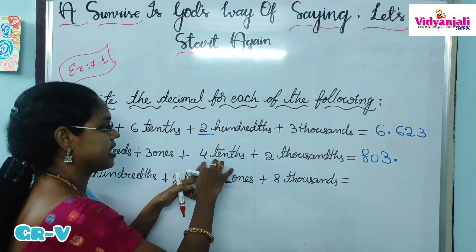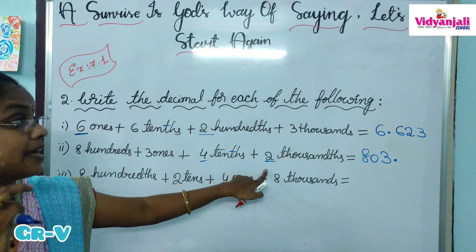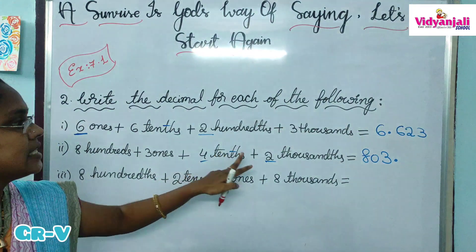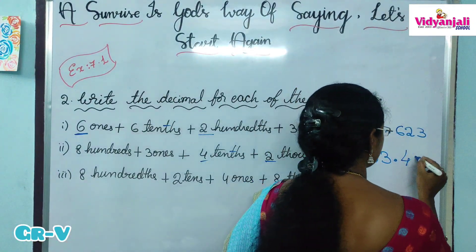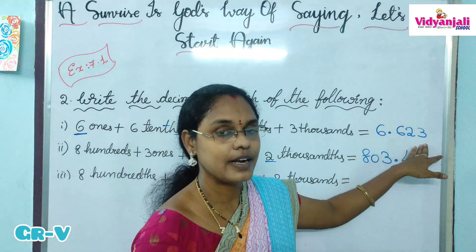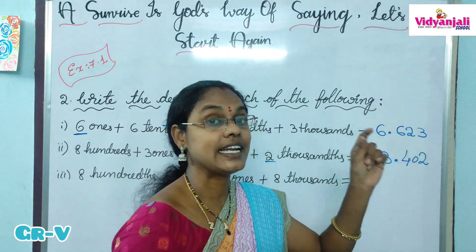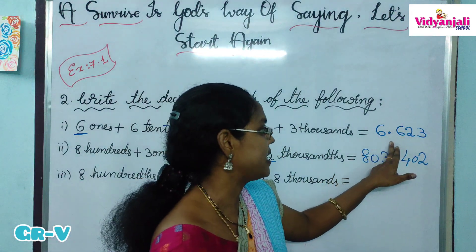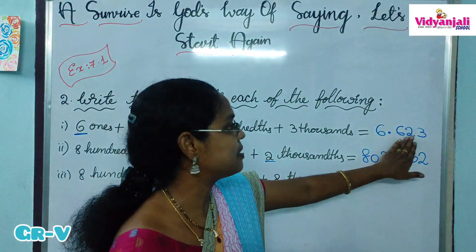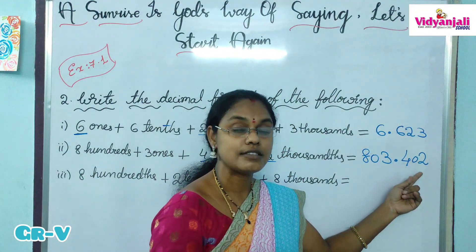In the 10ths place we have 4, in the 1000ths place 2. Between them the 100ths place is missing, so we have to write 0. So 4, 0, 2. See how to read this number: 6.623? The decimal part we have to read individually each digit — you should not read the decimal part as 'six hundred twenty-three', you read each digit separately. This number: 803 point 4, 0, 2.